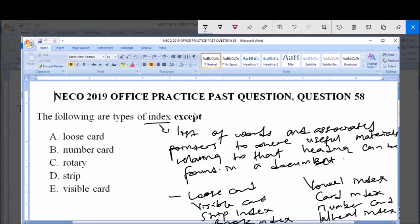Now the question asks which is not a type of index. Looking at the options, you can see that option C, rotary, is not a type of index because we have the loose card index, the number card index, the strip index, and the visible card index. So rotary is not a type of index, and that is the answer to this question.